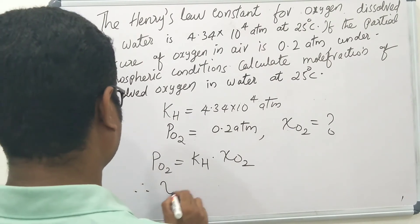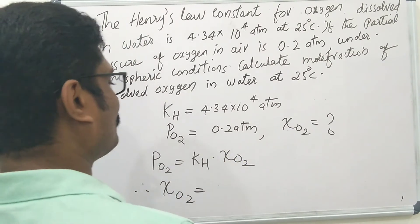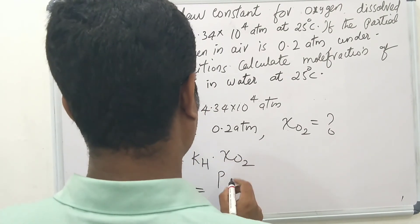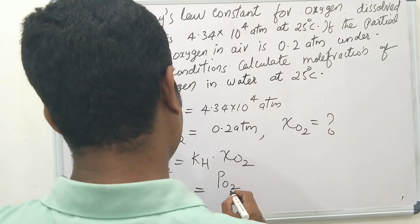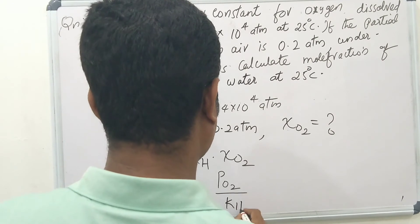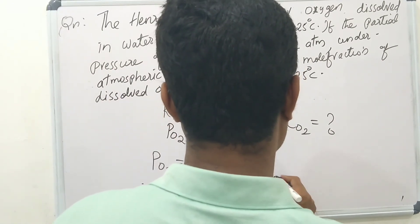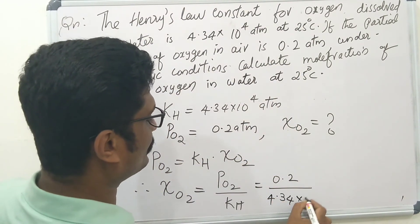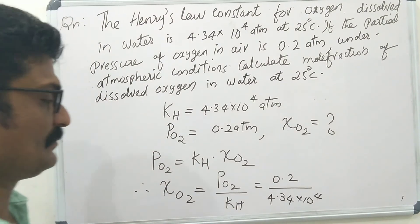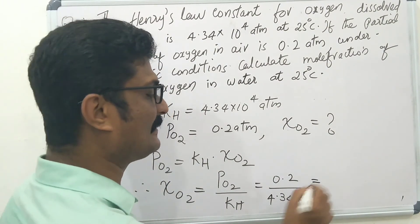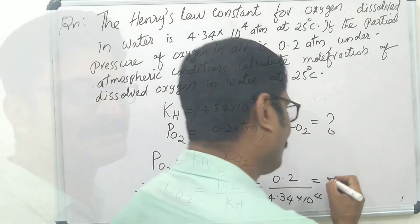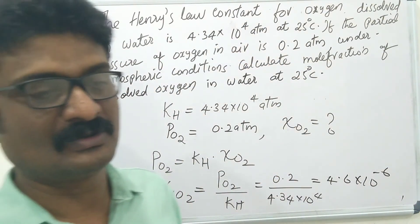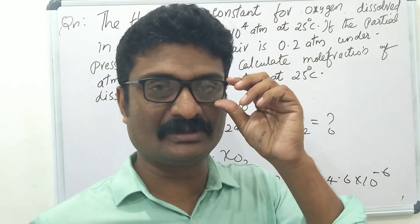Therefore, mole fraction equals partial pressure of oxygen divided by KH. That is 0.2 divided by 4.34×10⁴. Substituting values, you get the answer: 4.6×10⁻⁶.